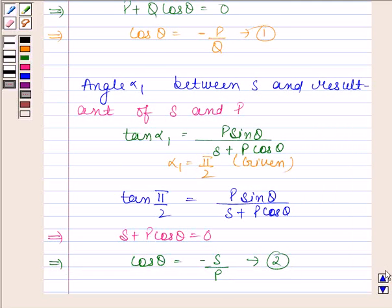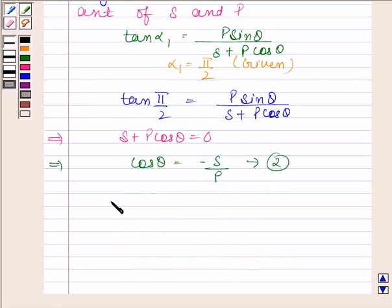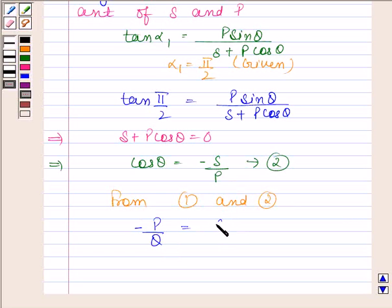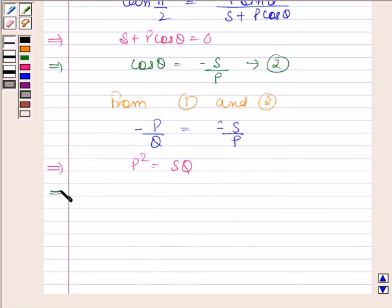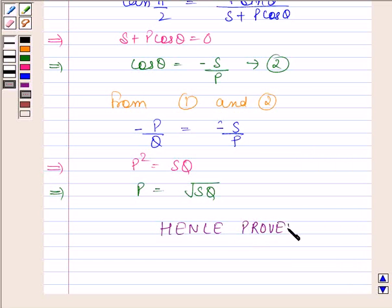Now from equations 1 and 2, we have minus P by Q equals to minus S by P. This implies P squared is equal to S into Q, and this implies P is equal to square root of S into Q. Hence we have proved that P is equal to square root of S into Q. So this completes the session. Bye and take care.